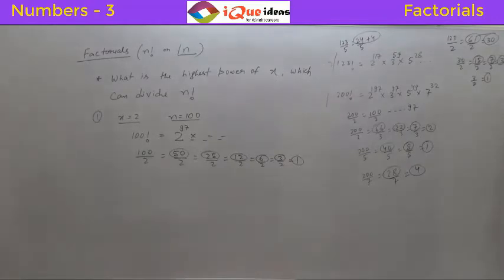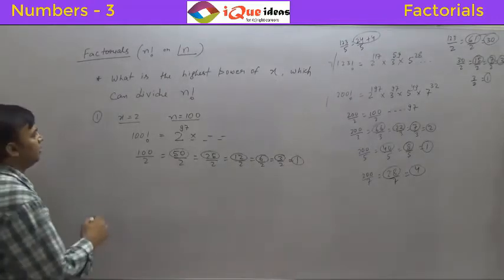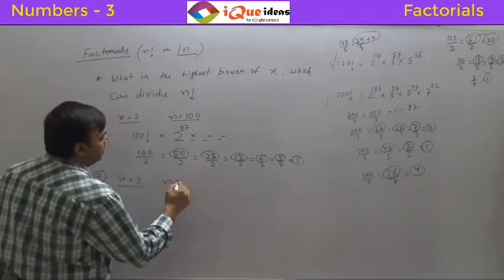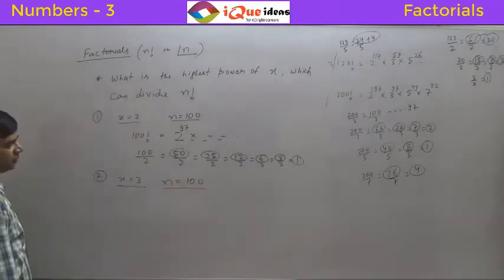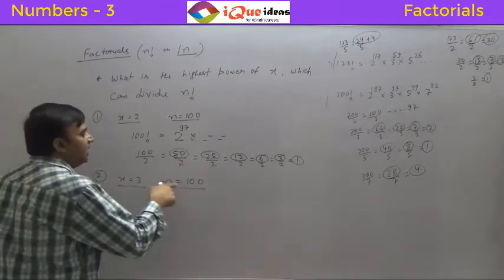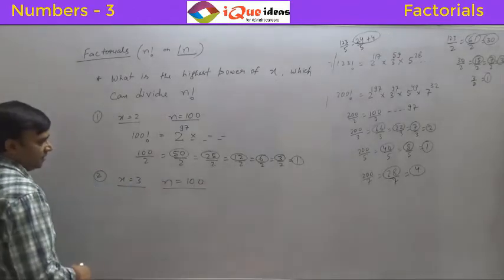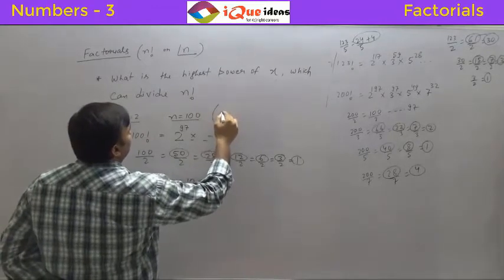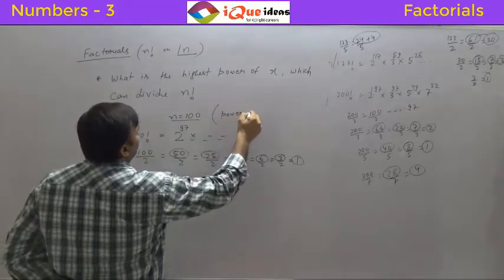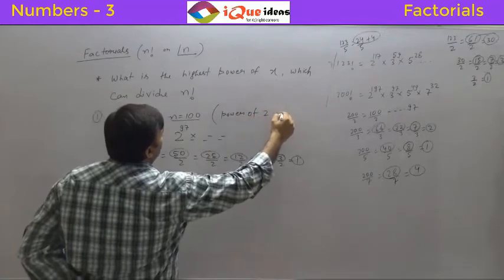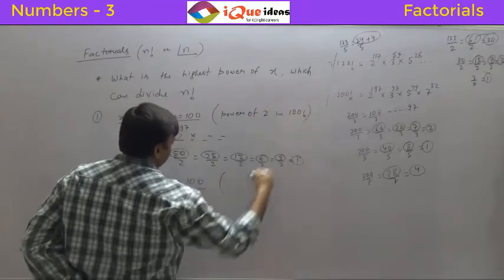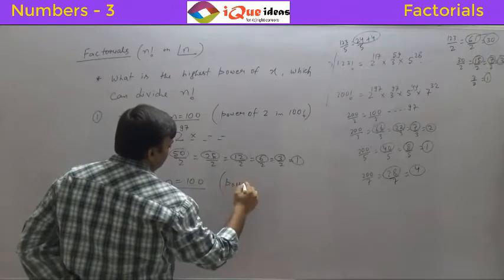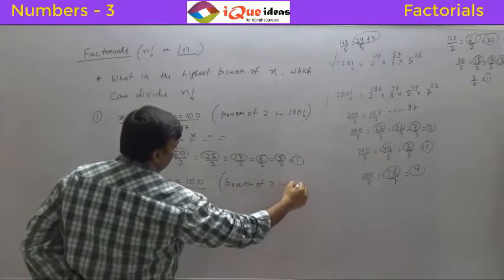So the highest power of 2 which can divide 100 factorial is 97. Similarly, if x is equal to 3 and n is equal to 100, the question becomes: what is the highest power of 3 in 100 factorial?